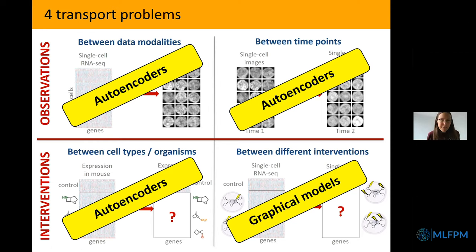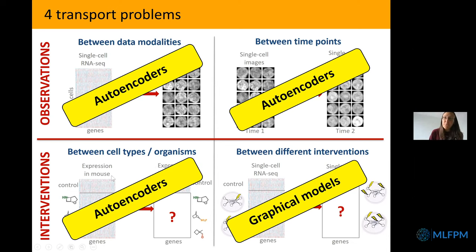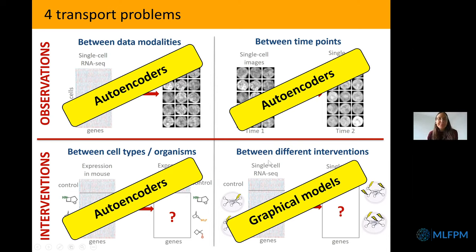Although they sound similar, these transport problems are actually quite different in nature. Predicting the effect of a different intervention seems very different from transporting the effect of a given intervention from one environment to another — say from mouse to humans, or from one cell type to another. I'll start with graphical models because I'll get back to this in the SARS-CoV-2 application, where I'll use all of these things together.